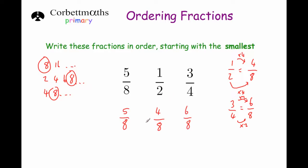Now we can put them in order quite easily. The smallest is 4 eighths, which is 1 half. The next smallest is 5 eighths. And the largest is 6 eighths, which is 3 quarters. So in order it would be: 1 half, 5 eighths and 3 quarters. To put fractions in order, get the same denominator — the same number in all of the fractions — and then just put them in order.